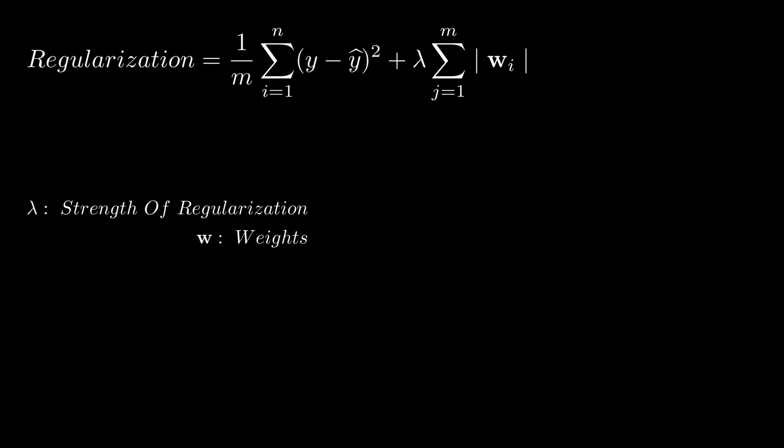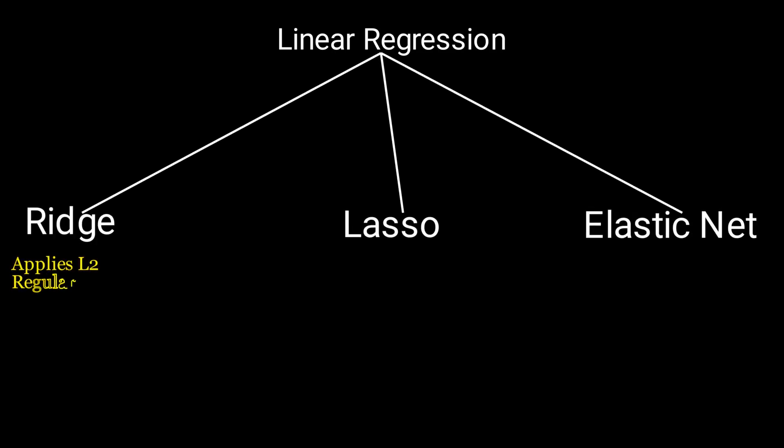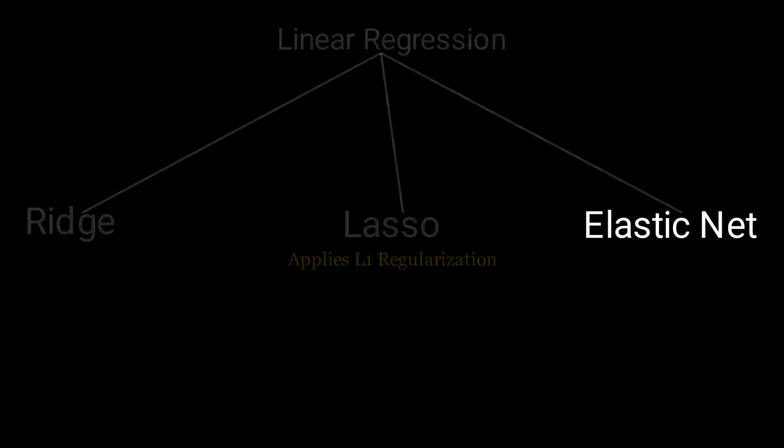This is all about basic math of regularization, but what does this have to do with lasso, ridge, and elastic net? Let us discuss that now. Ridge regression applies L2 regularization and lasso regression applies L1 regularization. Elastic net does a cool thing which I have to show you with a cool animation.